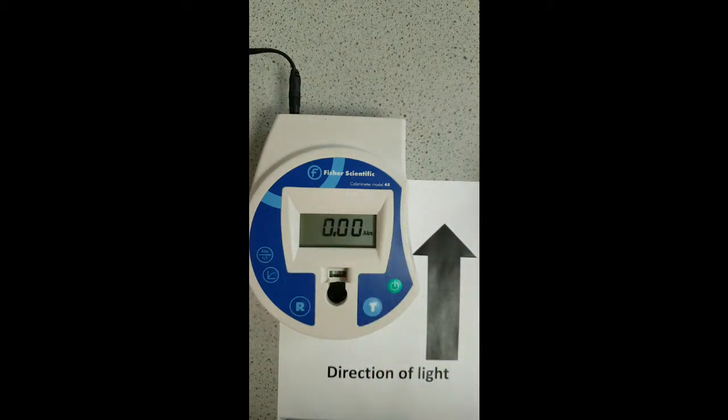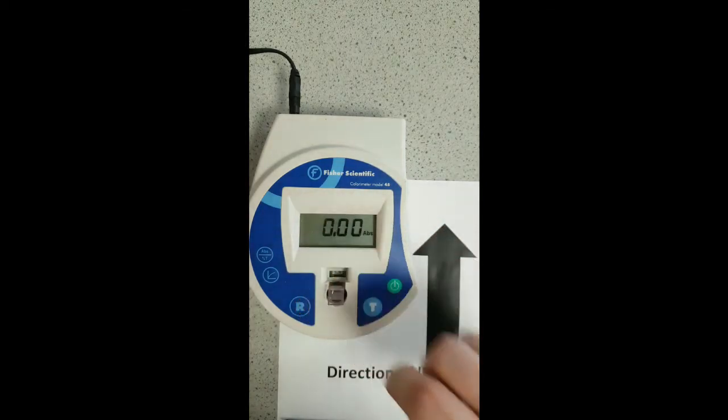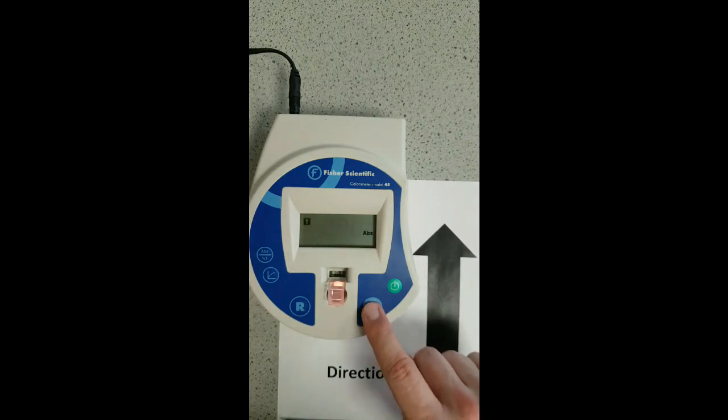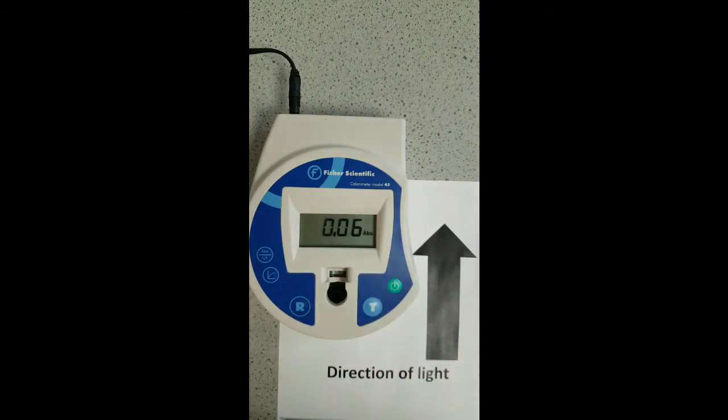Remove your cuvette with the blank or reference sample in there. Let's look at our first calibration standard. In this case we press T for test. That gives us an absorbance value for that particular wavelength in that particular sample. Make a note of that in an appropriate table, and then continue to run the rest of your calibration standards.